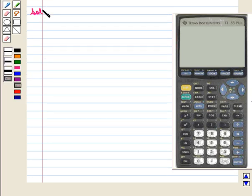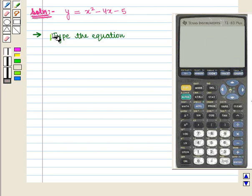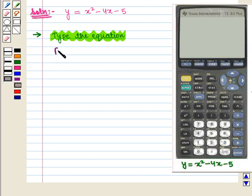Let us start with the solution of the given question. Here we have to construct table of values for the equation y = x² - 4x - 5 on graphing calculator. Let us type the equation. For this we press Y= key.